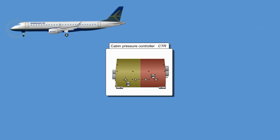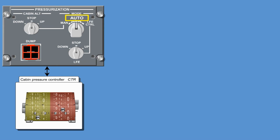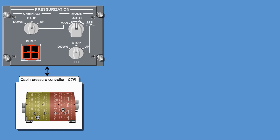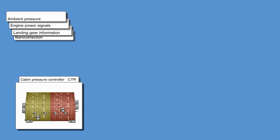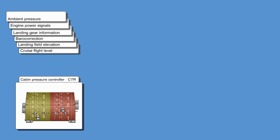The cabin pressure controller contains two identical control channels. In auto mode, one channel is in control and the other is in standby. The channel in control uses actual cabin pressure from the cabin pressure sensors and various data from other aircraft systems, such as ambient pressure, engine power signals, landing gear information, barrow correction, landing field elevation, and cruise flight level, to calculate the requested reference cabin pressure.